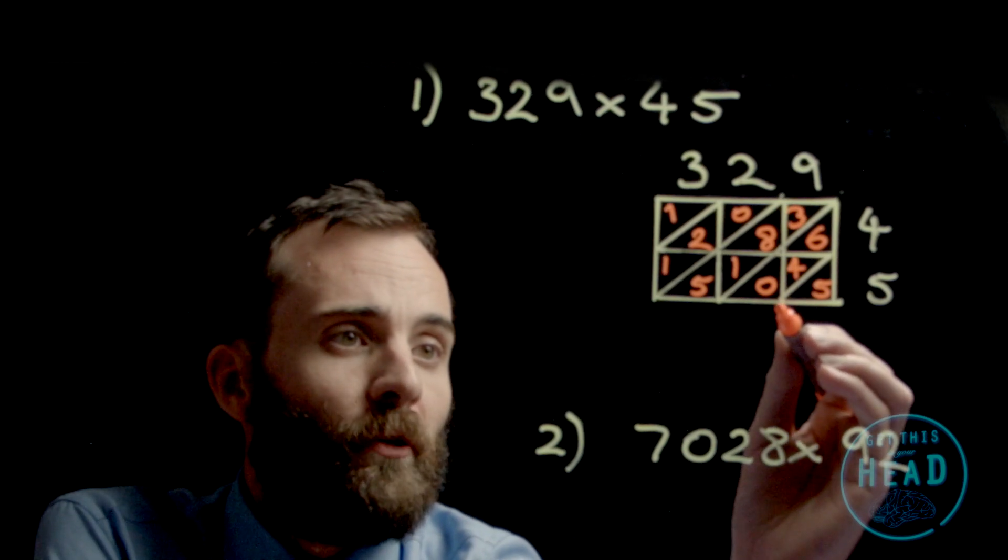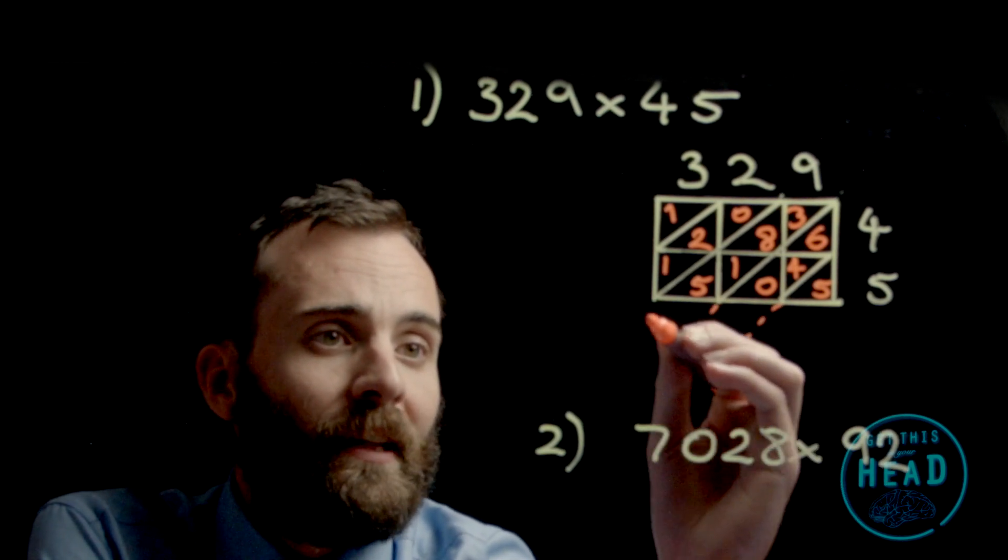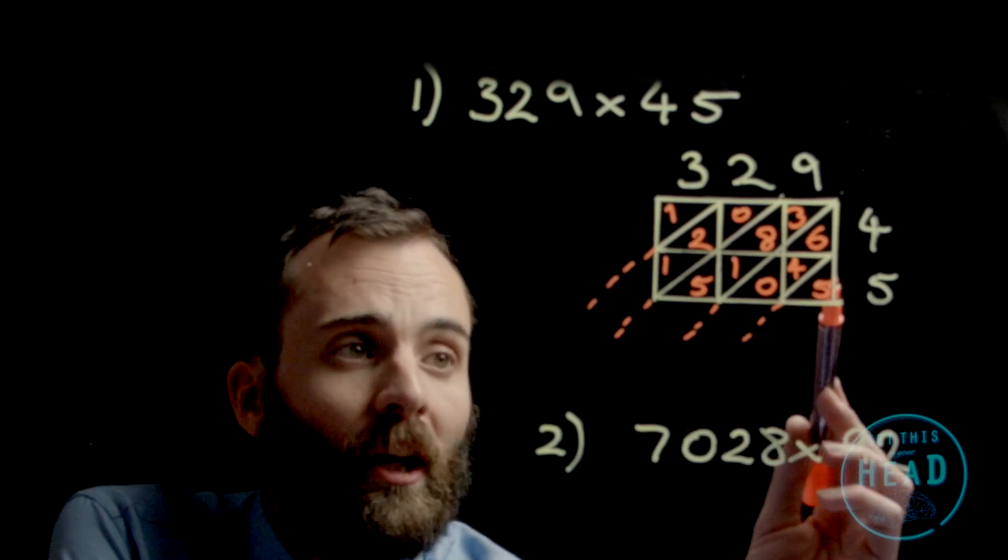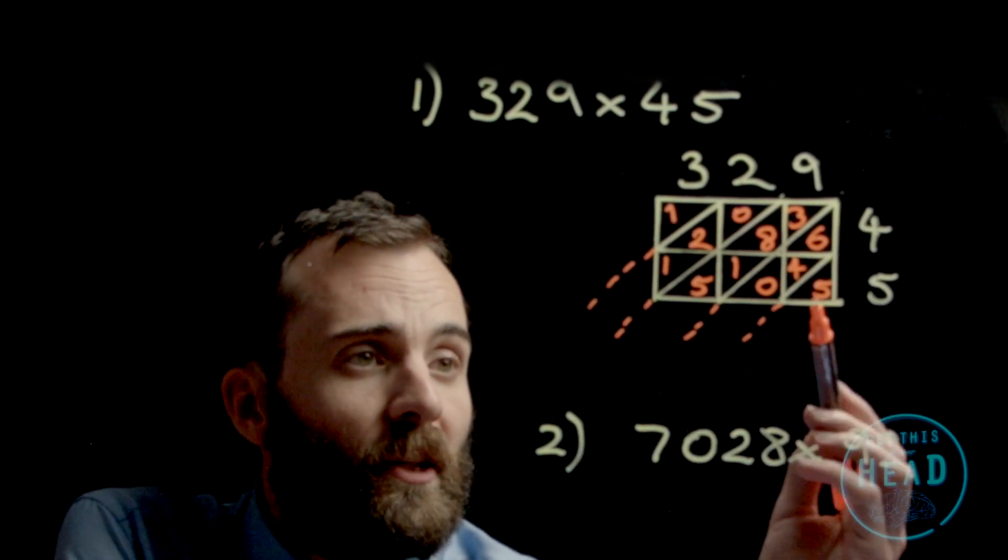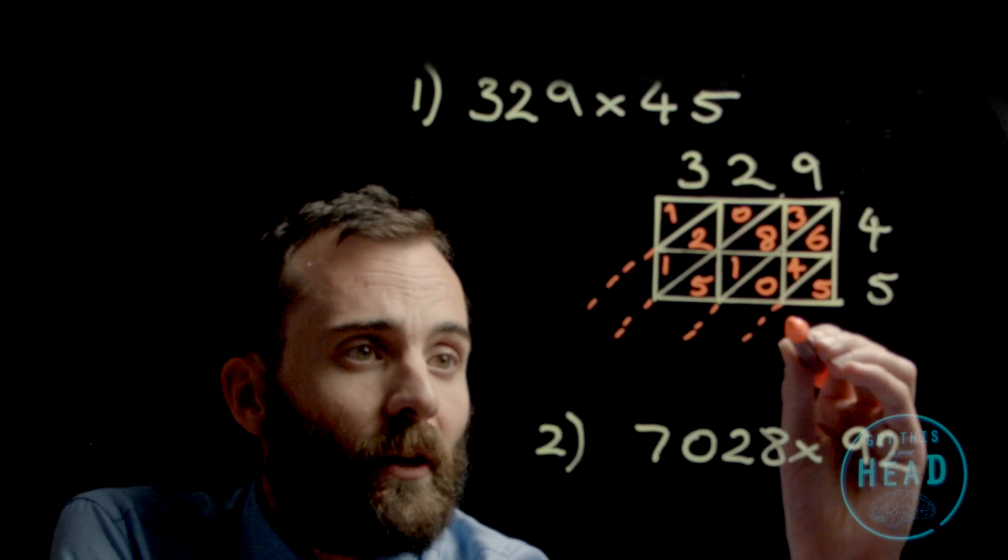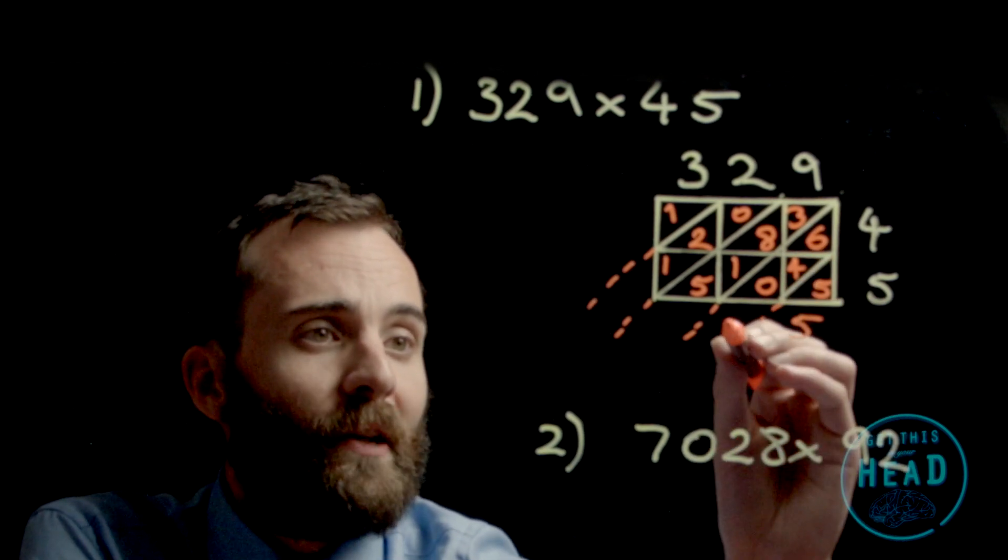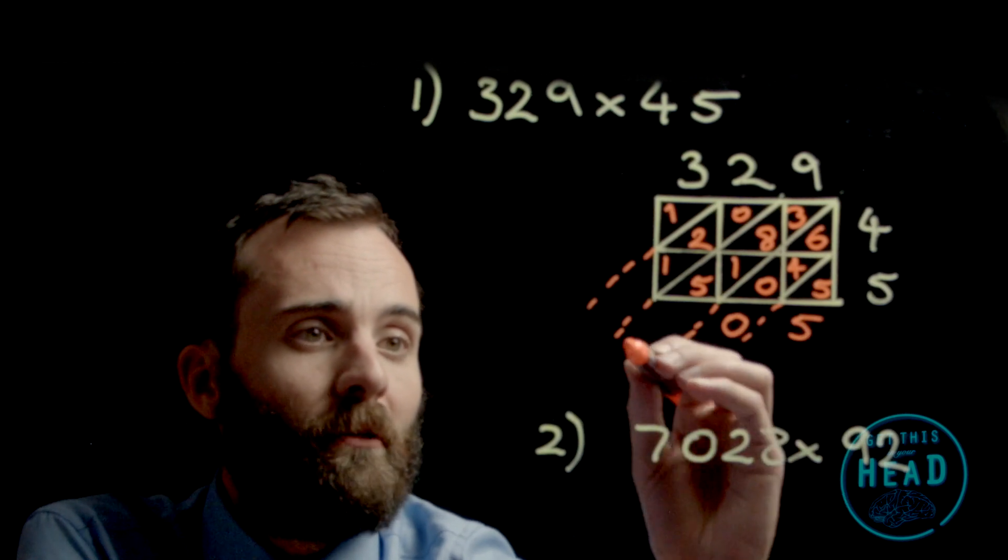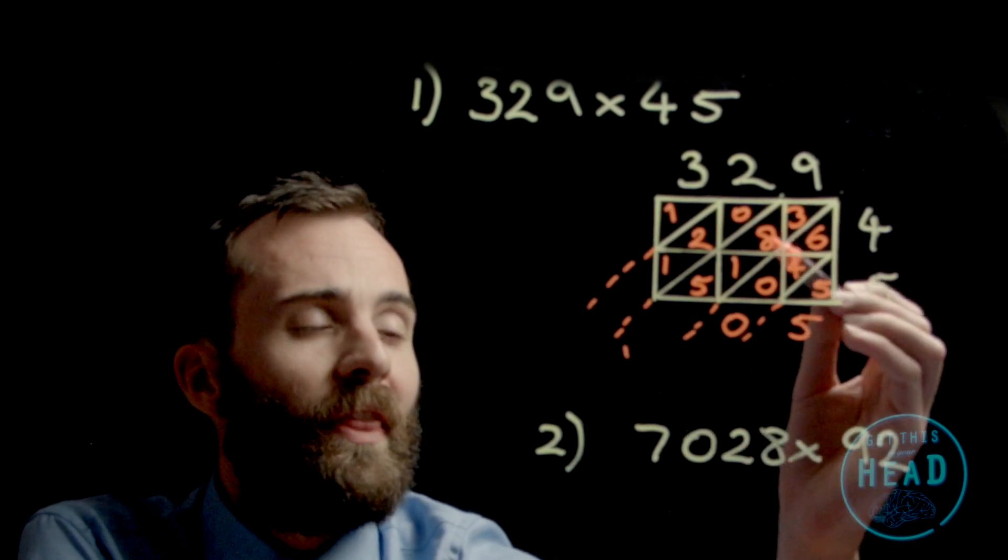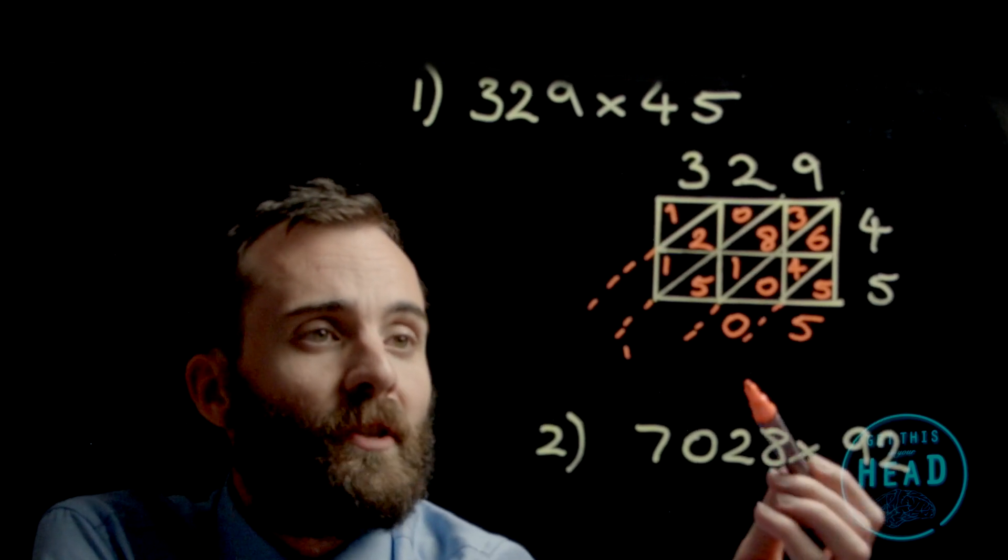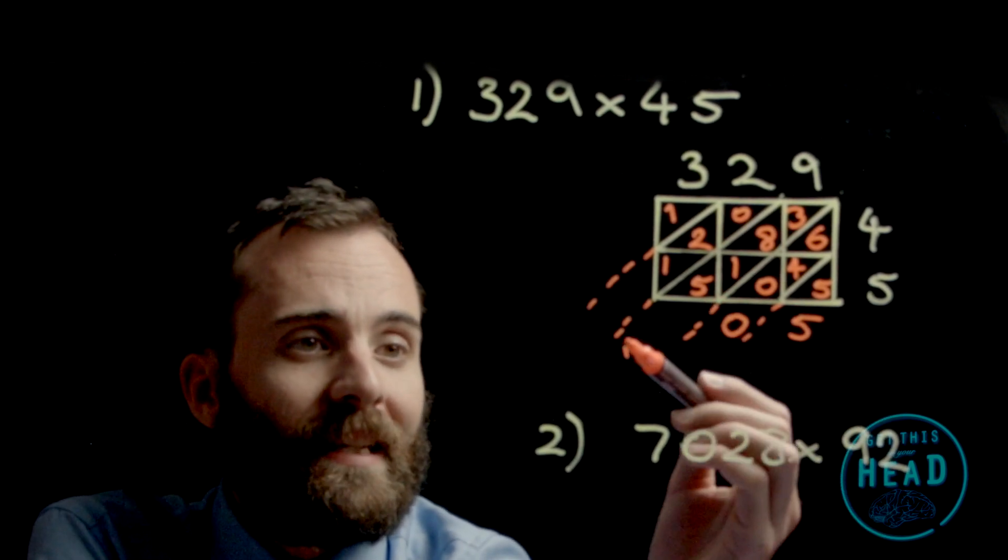Now I'm going to follow these diagonal lines down and do the addition in these diagonal strips. I have 5 by itself, that gives me 5. Here I've got 6 add 4 add 0, that's 10, so I put a 0 there and carry a 1. 3 add 8 is 11, add the 1 is 12, add the 5 is 17... 18.